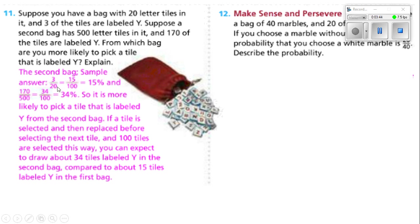We take 20 and multiply by 5 to get 100, and then multiply 3 by 5 as well, so 15 over 100 is 15 percent. For 170 over 500, we divide 500 by 5 to get 100, then divide 170 by 5 as well, giving us 34. So it is more likely to pick a tile labeled Y from the second bag — 34 percent versus 15 percent.